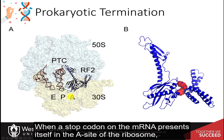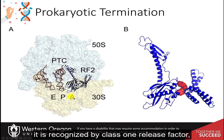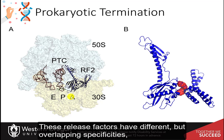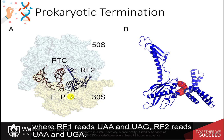When a stop codon on the messenger RNA presents itself in the A-site of the ribosome, it is recognized by a class 1 release factor, known as RF1 or RF2. These release factors have different but overlapping specificities, where RF1 reads UAA and UAG, and RF2 reads UAA and UGA.